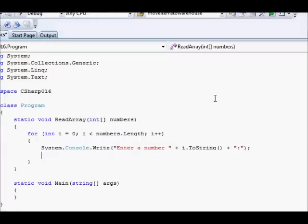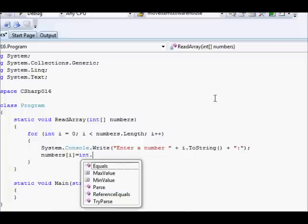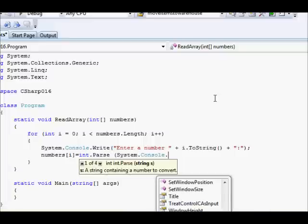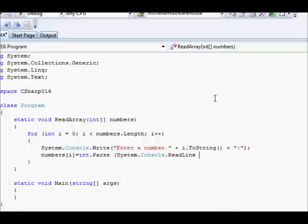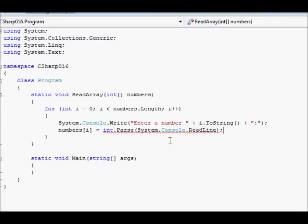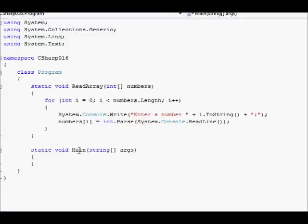And finally we are going to say numbers of i equal int dot parse system console read line. And that's it. We have to... Wait a second. I forgot these two brackets. This should solve it. So now we want to test that.